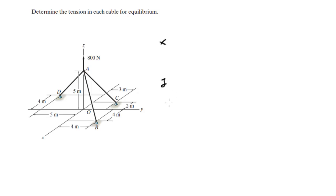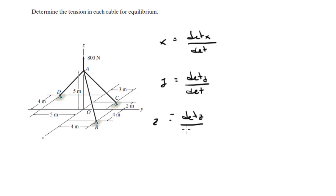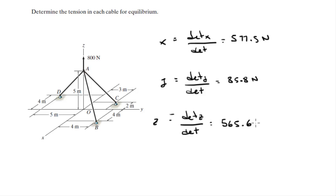The final step is straightforward: divide each variable's determinant by the main determinant. x = -351.1 / -0.608 ≈ 577.5 N, y = -52.2 / -0.608 ≈ 85.8 N, and c = -343.86 / -0.608 ≈ 565.6 N. Since x = T_AB, y = T_AC, and c = T_AD, these are the final answers: tension AB ≈ 577.5 N, tension AC ≈ 85.8 N, and tension AD ≈ 565.6 N.